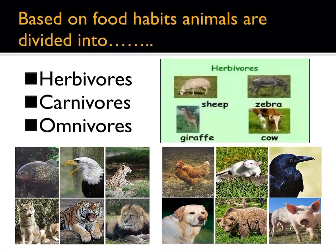Animals like rats, mice, squirrels, bears, and crows eat both plants and animals. Such animals are known as omnivores.